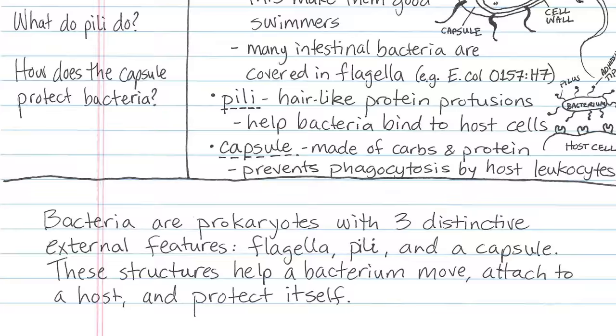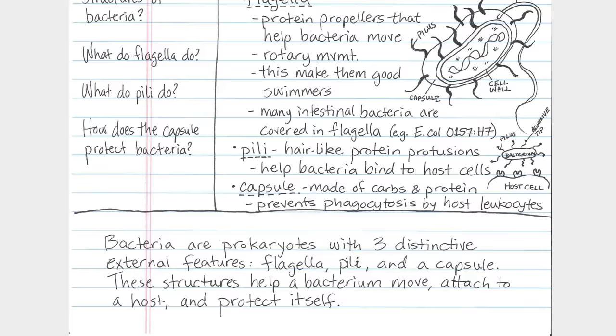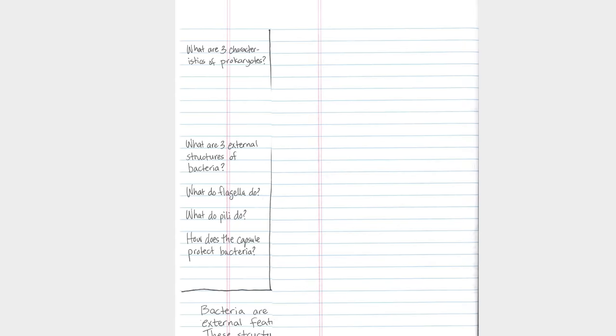When you are studying for a test or quiz, you now have a concise yet detailed record of your previous classes. A method of review is to cover the note-taking column and look only at the left-hand column. Say aloud, in your own words, the answers to the questions and prompts indicated.